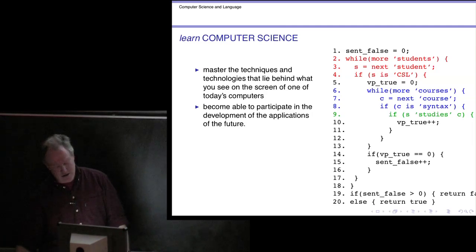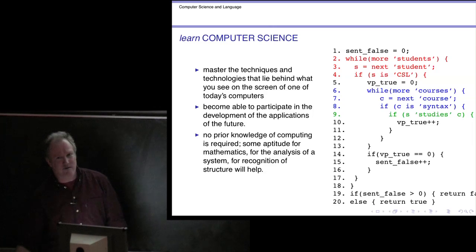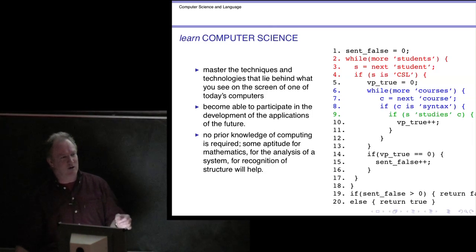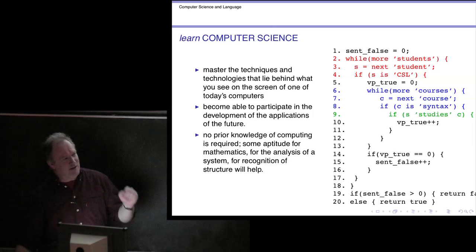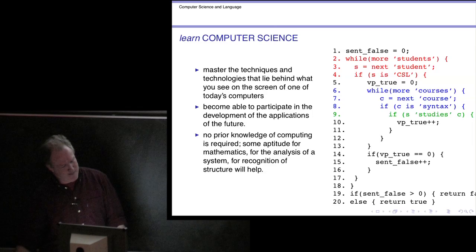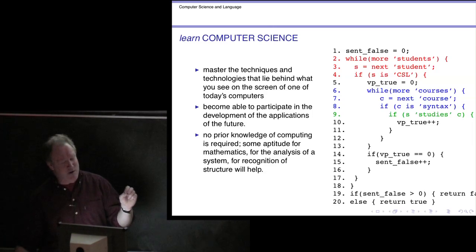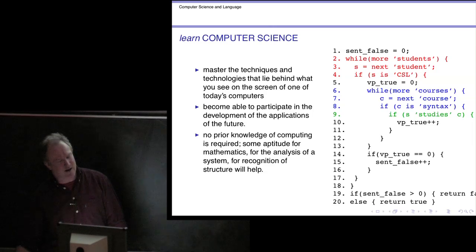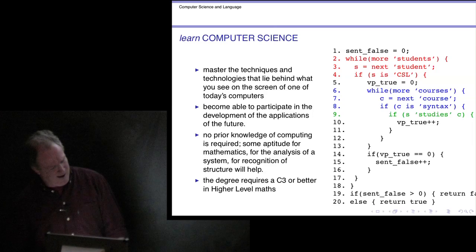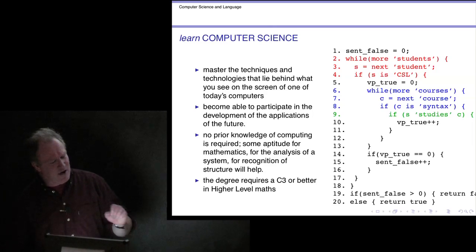As to what kind of prior abilities you should have, we're not going to assume any prior knowledge of computing — we will start from scratch. The sort of person who's going to be able to do this needs to have some aptitude for precise reasoning. That might be evidenced by being pretty good at mathematics; you don't have to be a whiz kid at mathematics, but having an appreciation for the analysis of a system and for recognizing structure. For that reason, we have a requirement of C3 or better in higher level maths.